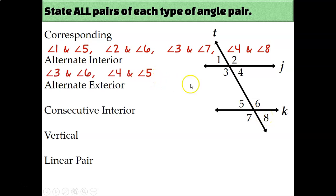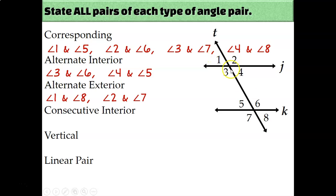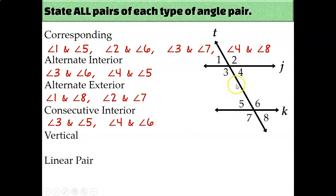For alternate interior, there are only two pairs: angle 3 and 6 — on opposite sides and in between the two intersected lines — and angle 4 and angle 5 — also on opposite sides and in between. There are also only two pairs of alternate exterior angles: angle 1 and 8, and angle 2 and 7. For consecutive interior, there are two pairs: angle 3 and 5 — both on the left side — and angle 4 and 6 — both on the right, in between lines J and K.